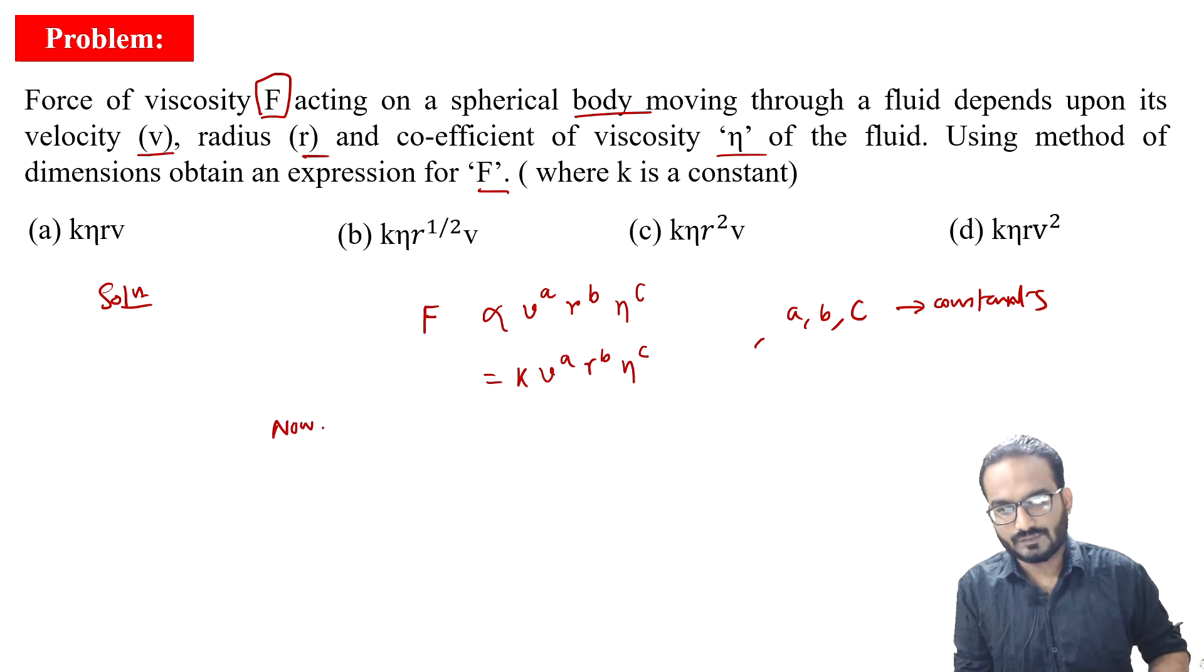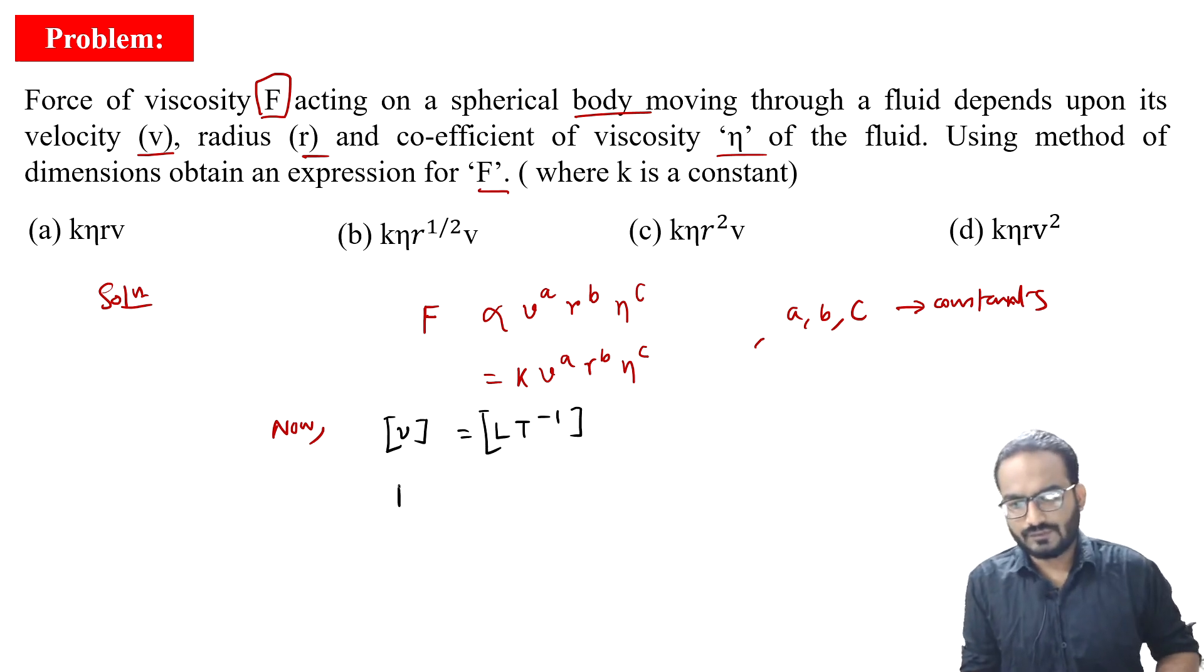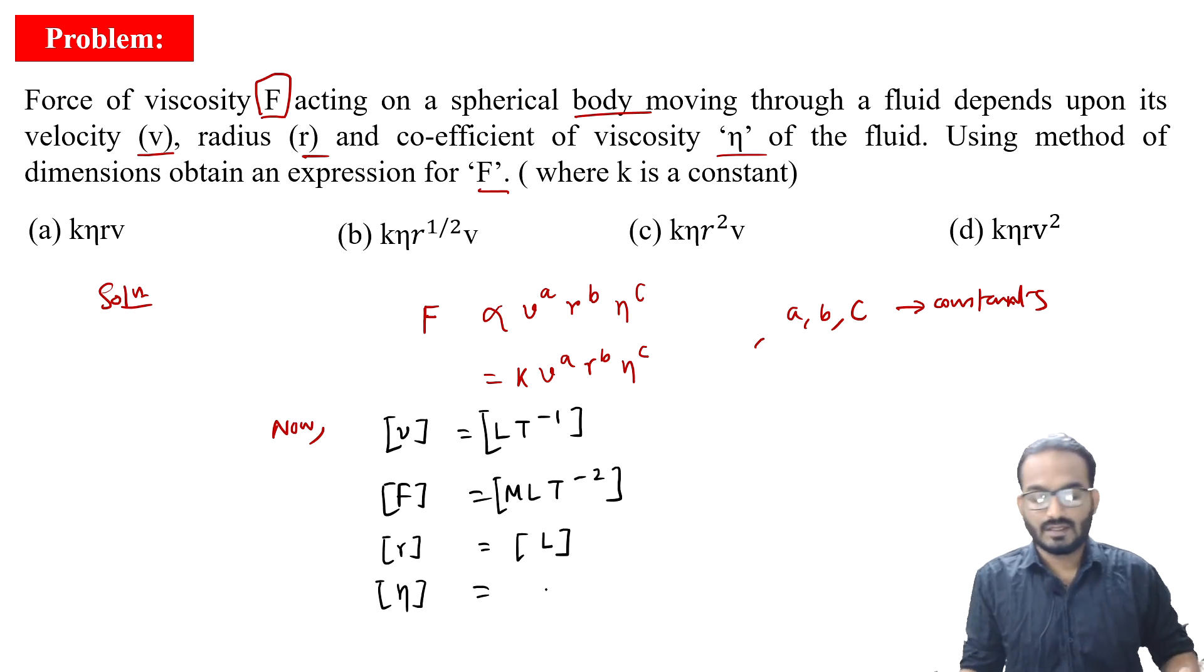So what are those dimensions? The dimension of velocity is meter per second, so [LT^-1]. Dimension of force is [MLT^-2]. Dimension of R is length, pure length [L]. And eta, for those who do not know, the dimension of eta is [ML^-1T^-1]. So we got all the dimensions of all the quantities.